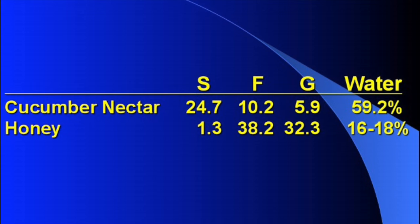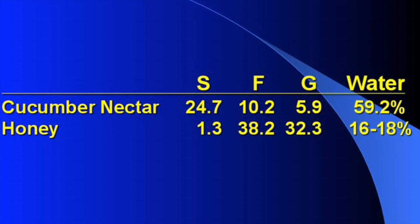The composition data shows this clearly. In cucumber nectar measured in the field, sucrose was 24 percent, fructose was 10 percent, glucose was 6 percent, and water was 59 percent — averaged over thousands of flowers. But in American honey, sucrose is only 1.3 percent. Fructose went from 10 percent up to 38 percent, and glucose went from 6 percent up to 32 percent. So sucrose-dominant nectars are ultimately transformed into fructose- and glucose-dominant honey, with an equivalent reduction in moisture.